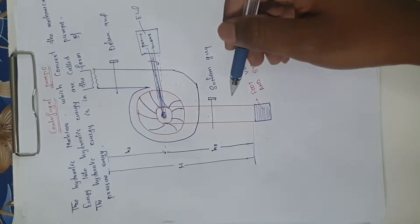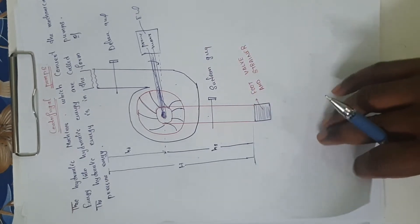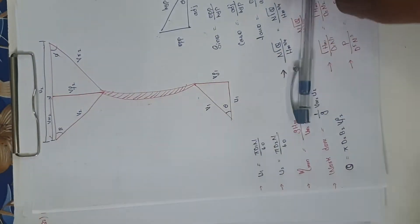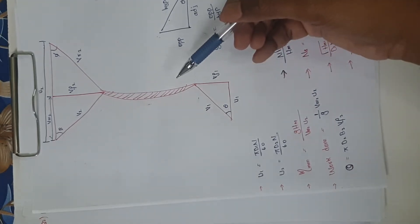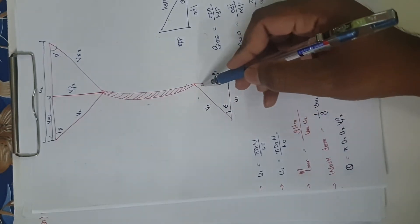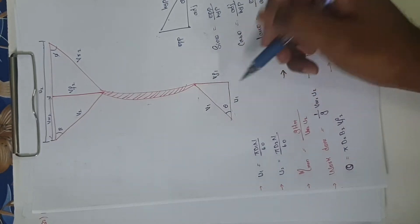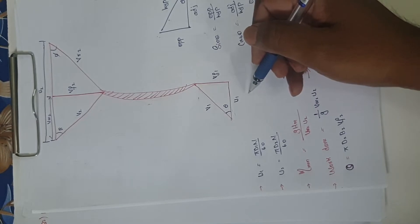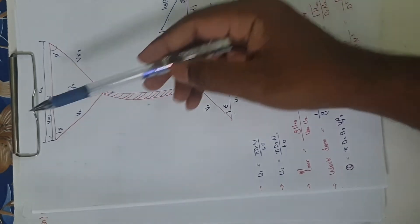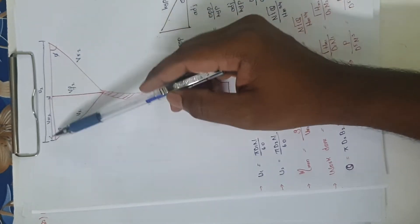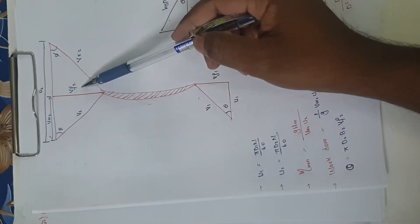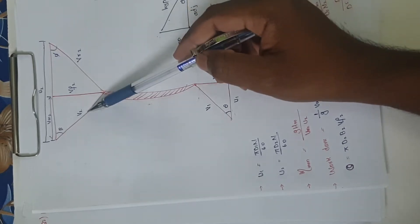With the help of centrifugal action, you can lift water from lower level to higher level. Whenever a problem on centrifugal pump is given, first draw the velocity triangle diagram. Label: U1, V1, Vf1 at inlet with angle theta; and at outlet U2, Vw2, Vr2, Vf2, V2 with angles phi and beta. This diagram, if labeled correctly for a 10-mark question, can earn you 3 marks automatically.